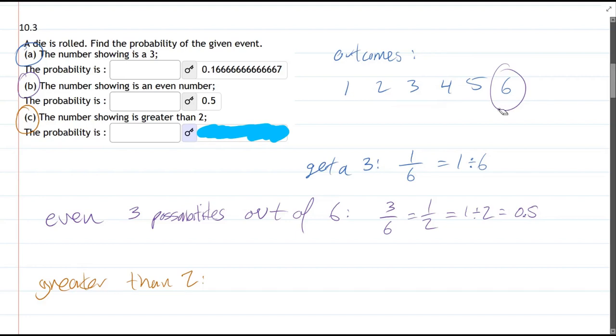Two is not greater than two. However, three, four, five, and six are all greater than two. So there's four possibilities.